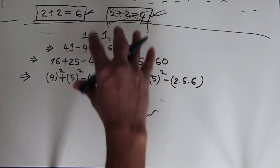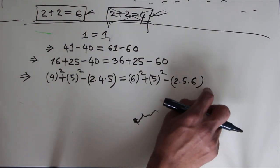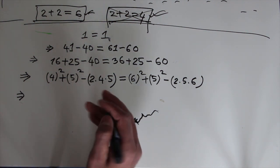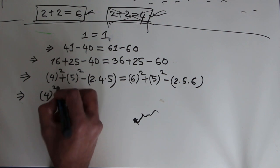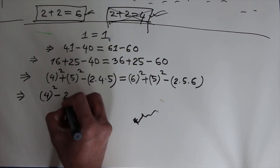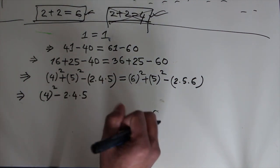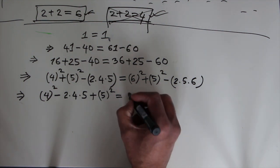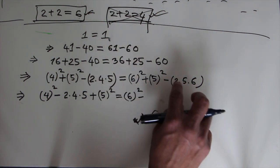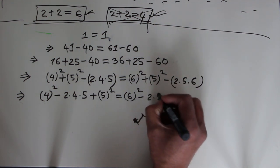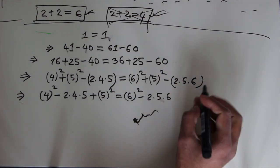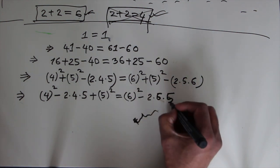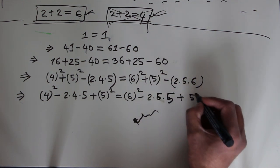From that statement to this statement, there is no error or mistake. Then I can rewrite the whole scenario by rearrangement: 4 squared minus 2 times 4 times 5 plus 5 squared equals 6 squared minus 2 times 6 times 5 plus 5 squared.